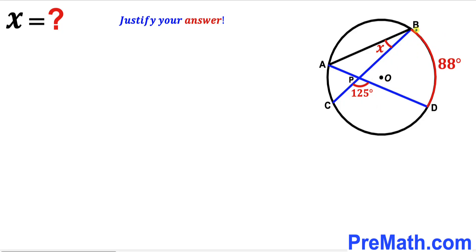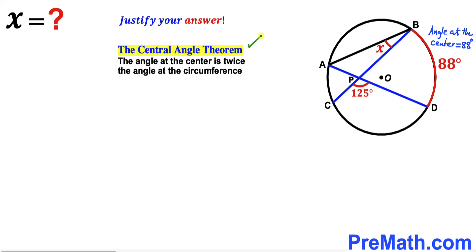Let's make an observation. The arc BD measurement is 88 degrees, so therefore the central angle is 88 degrees as well. Recalling the central angle theorem — the angle at the center is twice the angle at the circumference — we know the central angle is 88 degrees, so the angle at the circumference is half of that, which is 44 degrees.